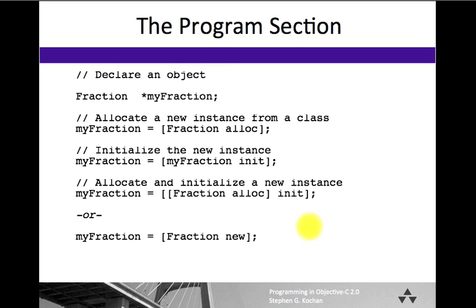What we haven't shown here is that the alloc and the initialization can occur in one step by using the new method. So if we send the new message to our Fraction class, we will get back an allocated and an initialized fraction object, which we can store in myFraction, just like this. And once again, using the new method is identical to doing the alloc followed by an init.